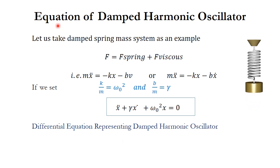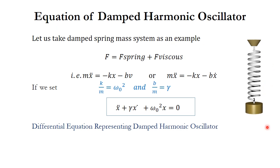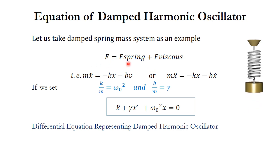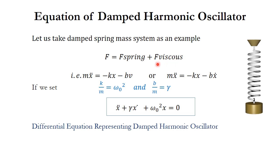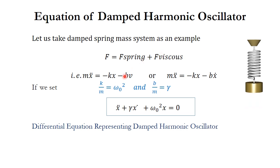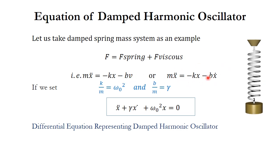Now we will find the equation of the Damped Harmonic Oscillator. Let us take the spring-mass system as an example — the spring-mass system oscillating in a viscous medium like air, water, etc. The net force will be the restoring force of the spring plus the viscous force offered by the medium. So F equals F_spring plus F_viscous, which gives m times x-double-dot equal to minus Kx minus B times V, or in terms of x, V can be replaced by x-dot.